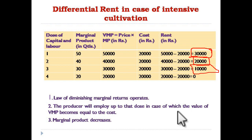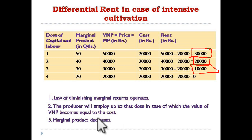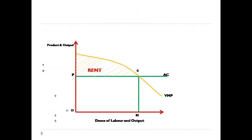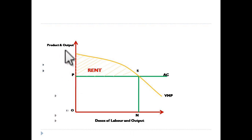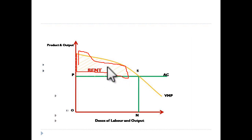The notable point here is the law of diminishing marginal returns operating in this process. The producer will employ up to that dose where the value of VMP becomes equal to the cost — obviously no producer will incur losses. The marginal product keeps decreasing through three stages: increasing returns to scale, constant returns to scale, and decreasing returns to scale. The average cost of the production process and the value of the marginal product curve together show that whatever is generated above the cost is called rent.